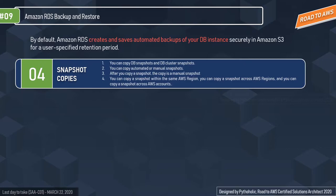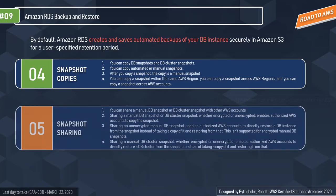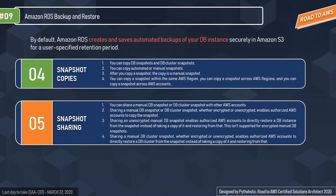Snapshot sharing allows you to share a manual DB snapshot or DB cluster snapshot with other AWS accounts. Sharing enables authorized AWS accounts to copy the snapshot. Sharing an unencrypted manual database snapshot enables authorized accounts to directly restore a DB instance from the snapshot, rather than taking a copy first. This direct restore from snapshot is not supported for encrypted manual DB snapshots.